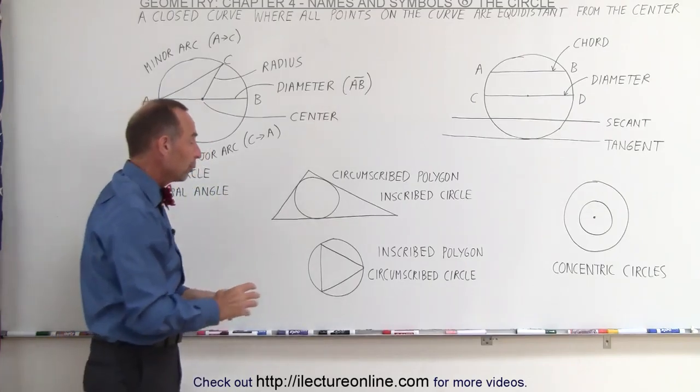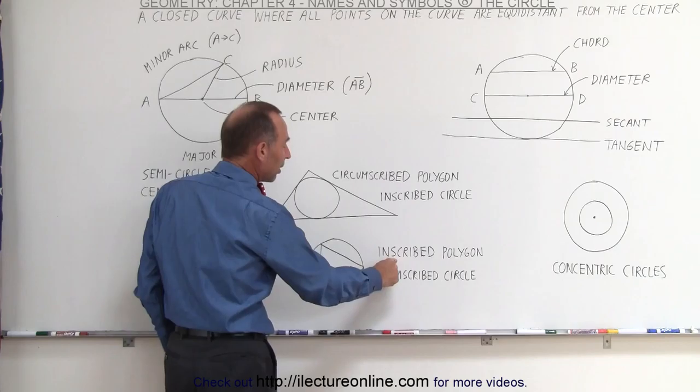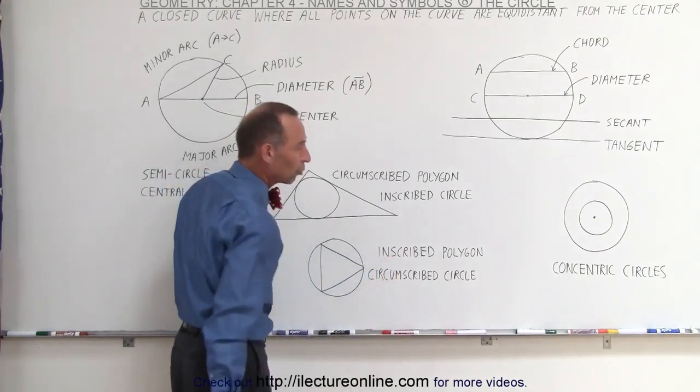But if we reverse the order, we draw the polygon inside the circle, then it's called the inscribed polygon and the circumscribed circle.